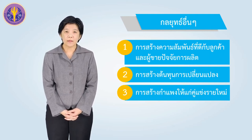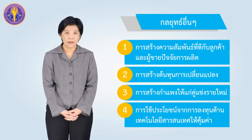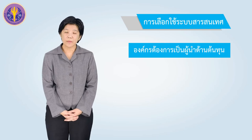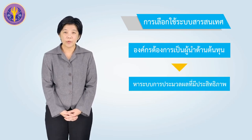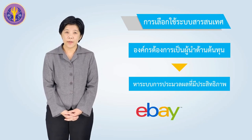Third, raise barriers to entry to prevent new competitors from entering the market. Fourth, leverage investment in IT to maximize returns. Fifth, breakdown — breaking down traditional industry barriers. Examples of these strategies in action include online platforms such as eBay.com or the direct sales model of Dell Computer, which make transactions very fast and easy to review.